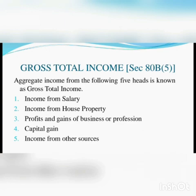To recap the 5 heads: salary, house property, business or profession, capital gain, and income from other sources. The aggregate income under these five heads is termed as Gross Total Income.